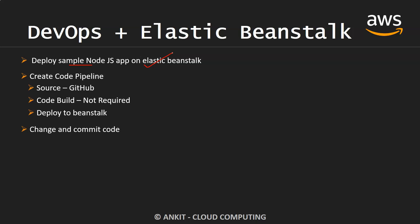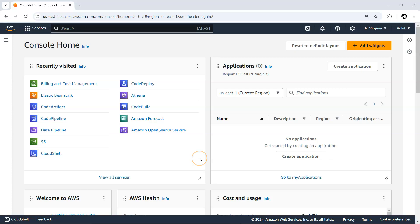Afterwards we are going to change some things in the code, commit those changes, and observe the new pipeline execution being started and test whatever changes we have applied. Let me go to the AWS Management Console.